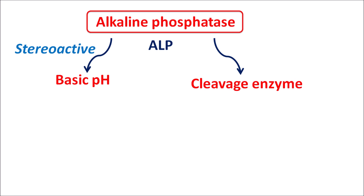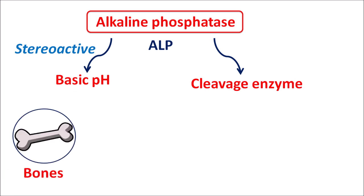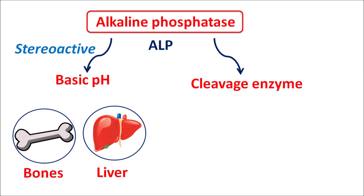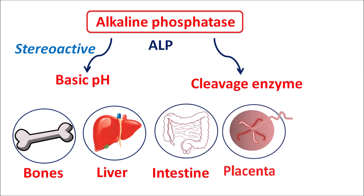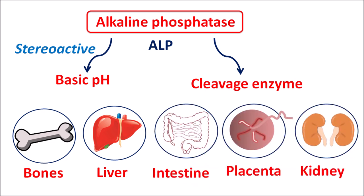ALP exists in many tissues including bones, liver, intestine, placenta, kidney, and even brain. In many tissues this alkaline phosphatase is distributed and it plays a key role in many cellular activities. Even though this enzyme is present in all these tissues, different isoforms of this enzyme are present in the different tissues.